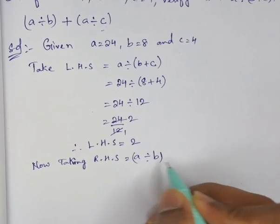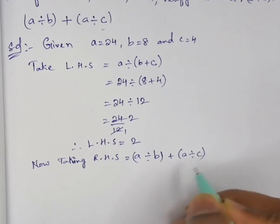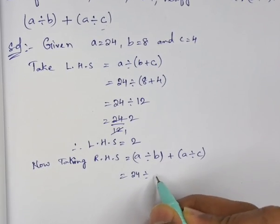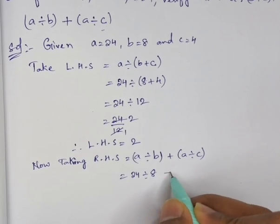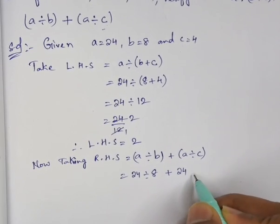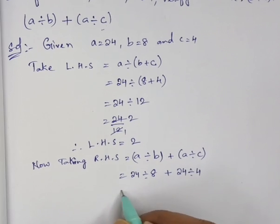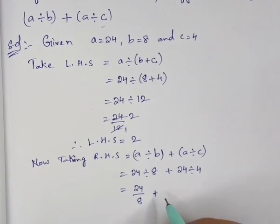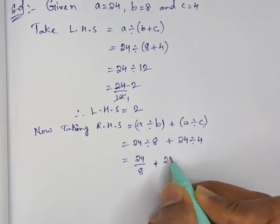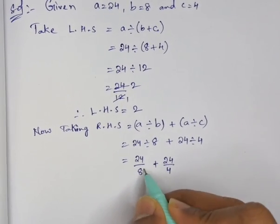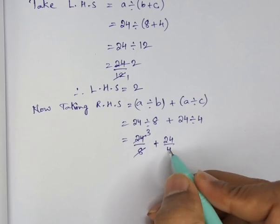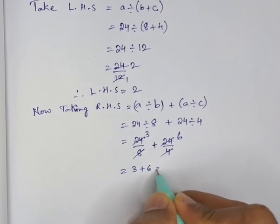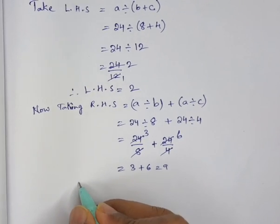What is a? a is 24 divided by b, b is 8, plus 24 divided by c, c is 4. 24 by 8 plus 24 by 4, which is 3 plus 6, equals 9.